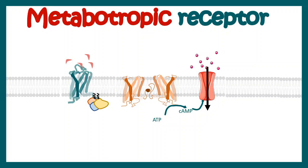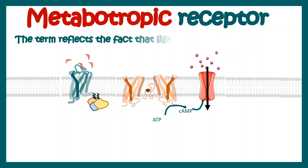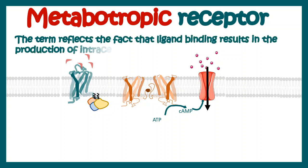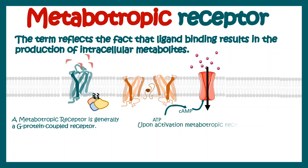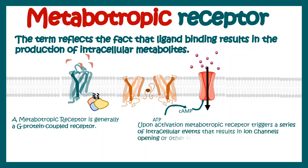In this video we'll talk about metabotropic receptors. Metabotropic receptors are a type of receptor which, upon binding to a ligand, lead to the production of certain metabolites — that is why they are known as metabotropic receptors. Generally, metabotropic receptors are G-protein coupled receptors, and when activated they can lead to activation of several intracellular components and second messengers that might trigger other intracellular events.